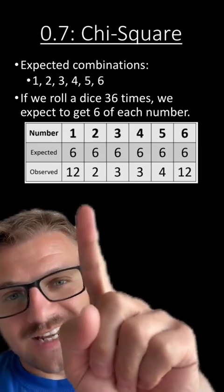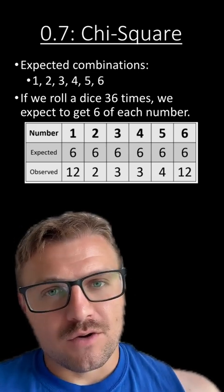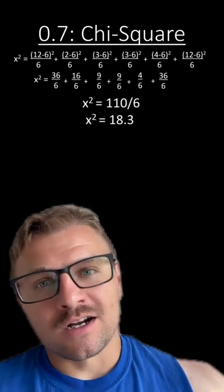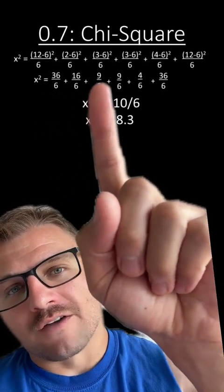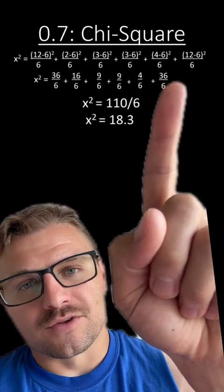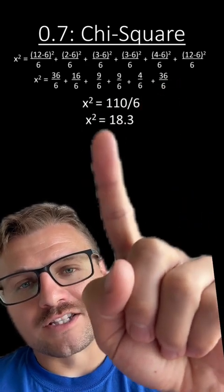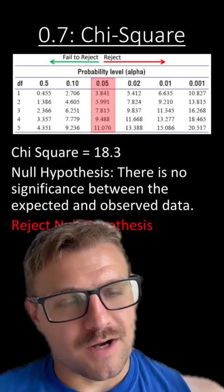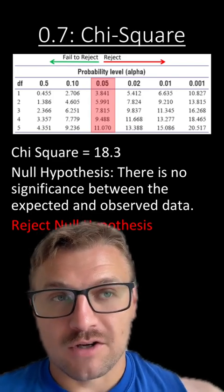So pause the video if you want time to calculate the chi-square. You can see I did it here. You can see the values that we got for each of the different variables, 1 through 6. We calculated our chi-square, and our chi-square is 18.3. Now remember, this experiment is different.